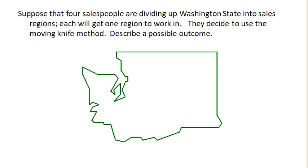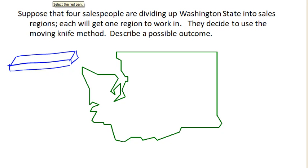Next we're going to look at the moving knife method. The moving knife method is a really simple idea. Imagine we have a cake and a referee — some outside person comes in and holds a knife over the top of the cake and starts moving it from one side to the other. As soon as any player feels that the piece to the left of the knife is worth a fair share, they shout 'stop.' The referee then stops and that piece goes to whoever called stop.